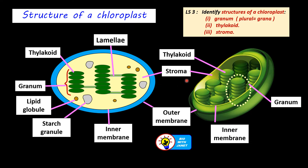Next we have the liquid part — the stroma. Note: stoma is the pore in the leaf, but stroma is the colourless fluid surrounding the granum or the thylakoids. It is the site for the light-independent reaction (LIR), which produces glucose. Glucose is produced in the stroma, and the fixation of carbon dioxide also occurs here — carbon dioxide is trapped and incorporated into an organic compound in the stroma.